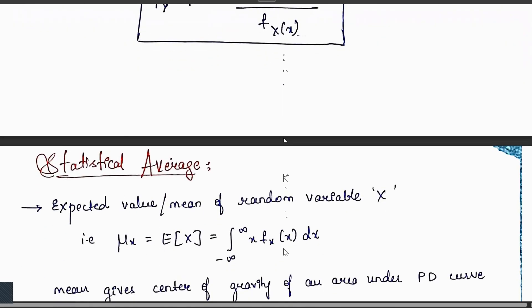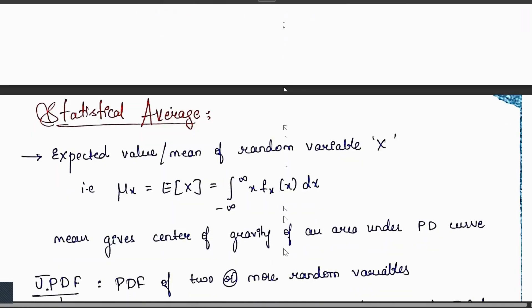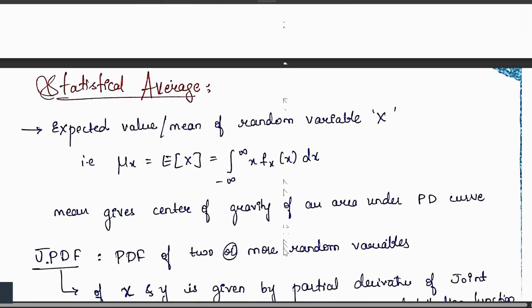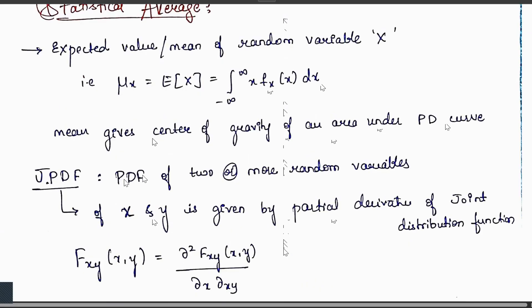Statistical averages: the expected value or mean of a random variable X is μₓ = E[X] = ∫[−∞ to ∞] x · fₓ(x) dx. The mean gives the center of gravity of the area under the probability distribution curve. Joint probability distribution is the PDF of two or more random variables, given by the partial derivative of the joint distribution function.